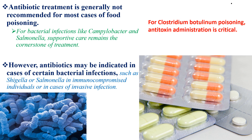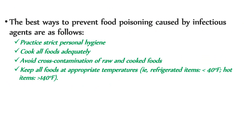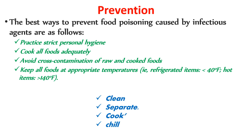For Clostridium botulinum, antitoxin administration is critical. Food poisoning can't always be prevented; however, these four steps will help reduce your risk: clean, separate, cook, and chill. Wash your hands and work surfaces before and while preparing food, and after food has been prepared. Keep raw meat, seafood, and eggs away from ready-to-eat foods. Use separate cutting boards and keep raw meat away from other foods while shopping and in the refrigerator. Use a food thermometer to ensure foods are cooked to a safe temperature, and set your refrigerator to 40°F (4.4°C).